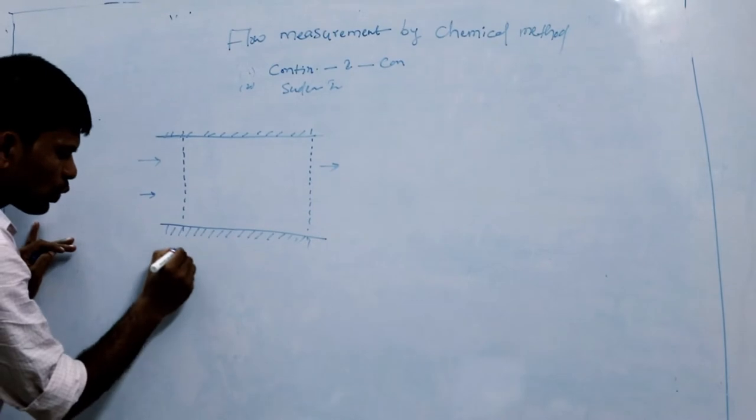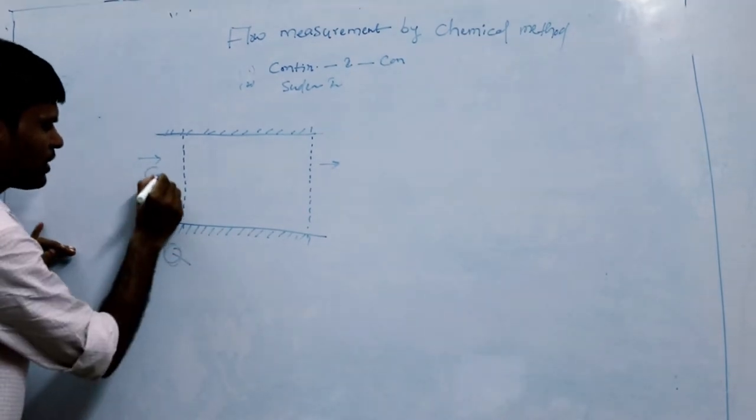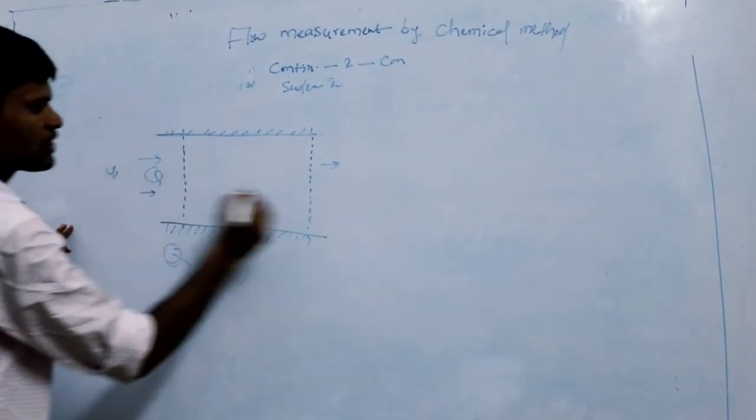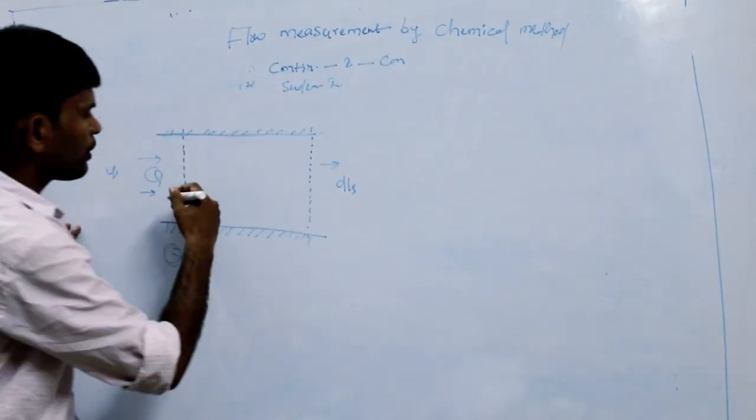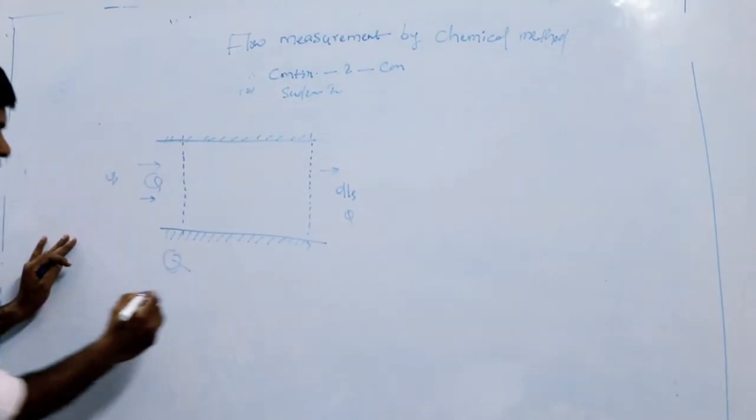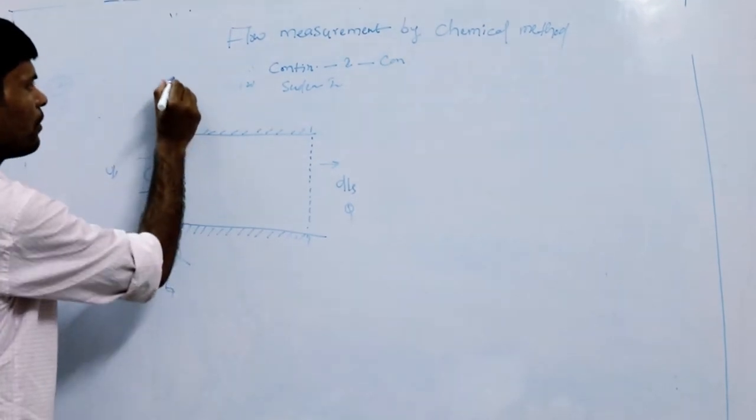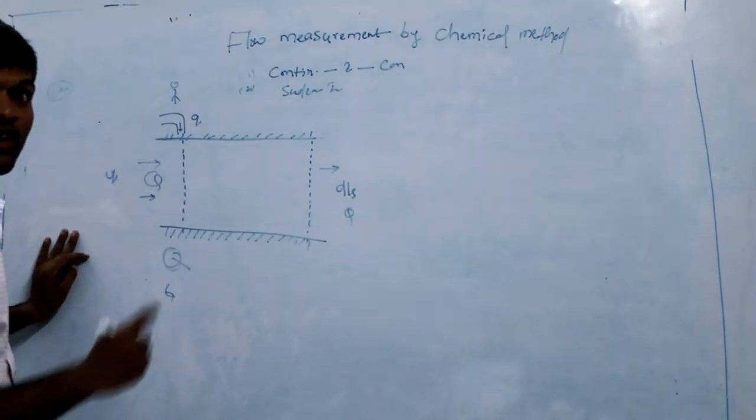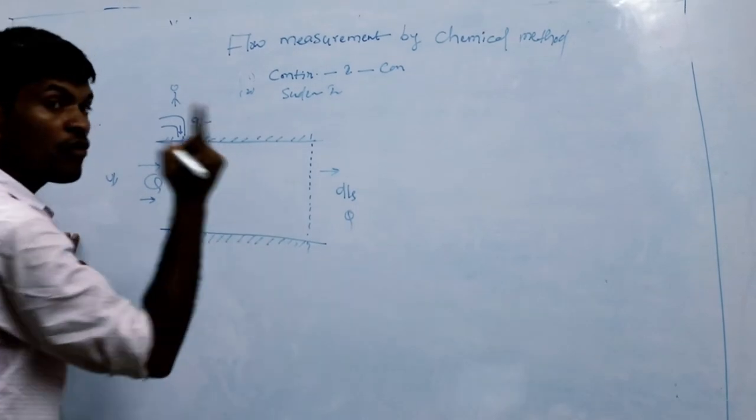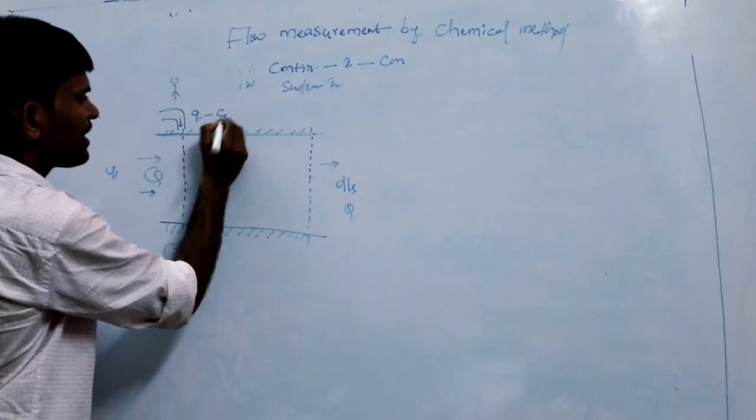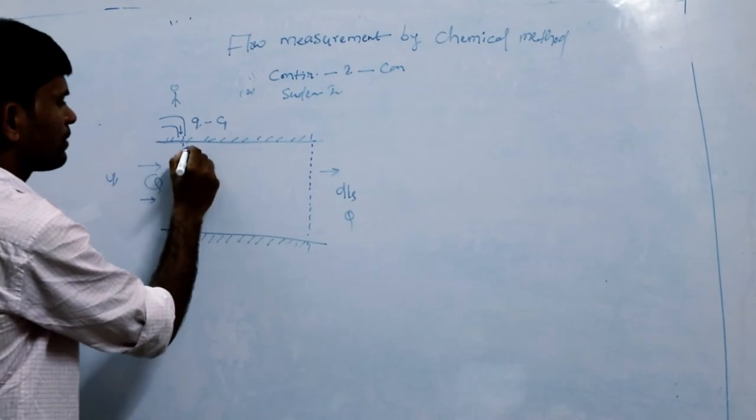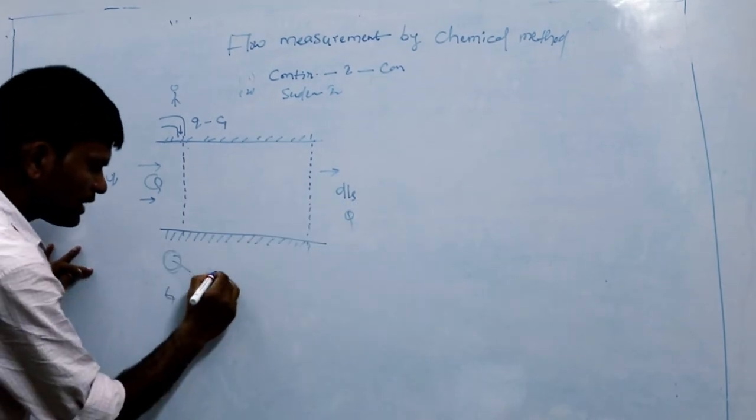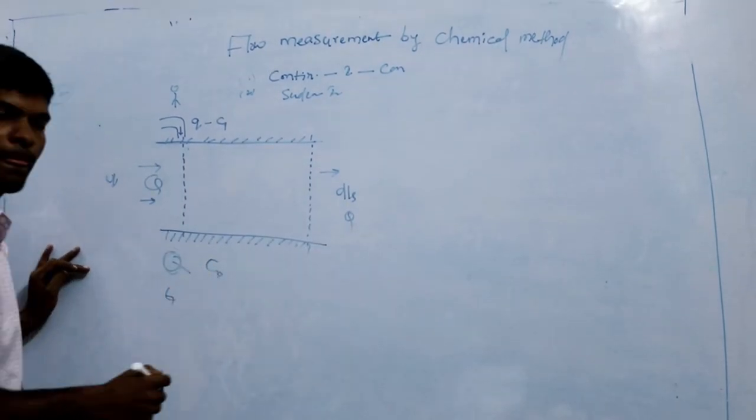Here's Q, the initial water flowing into the stream. This is upstream, this is downstream, and you're getting Q out. At time T1, you add a small q amount with known concentration C1 into this stream. The initial concentration of the stream is C naught.